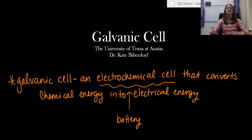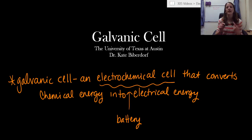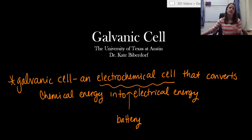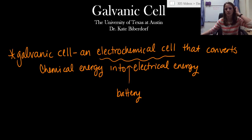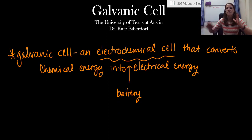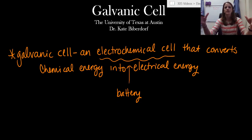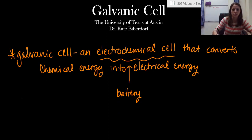We're going to draw out the schematic of a very simple electrochemical cell, specifically a galvanic cell, in just a second, but we've got to hit a couple more definitions. A galvanic cell is always a spontaneous process — it is something that occurs on its own.